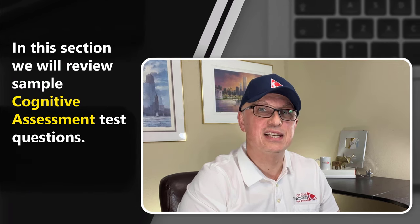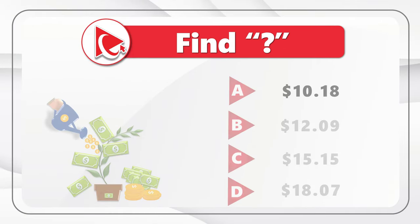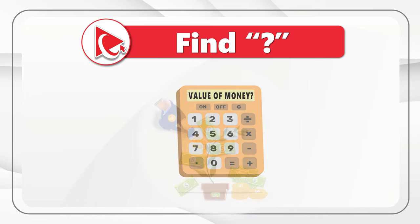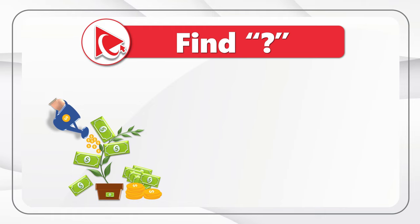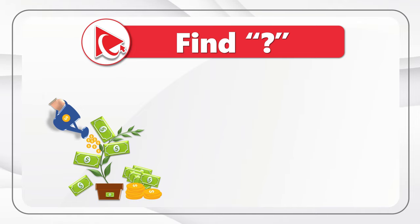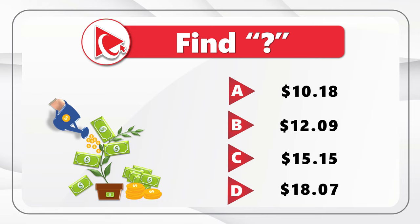Have you ever dealt with the money tree? Now it's your opportunity to check your attention to details. You're presented with the money tree making enterprise, and you need to calculate the total value of money that you see in the picture. Each coin is one cent and each bill equals one dollar. Once you complete the calculations, please select one out of four possible choices. Choice A: $10.18. Choice B: $12.09. Choice C: $15.15. And last but not least, Choice D: $18.07. Take a close look to see if you can complete the calculations.